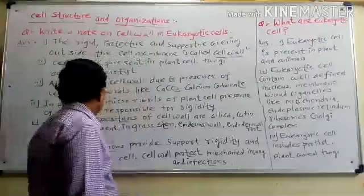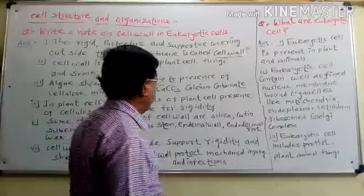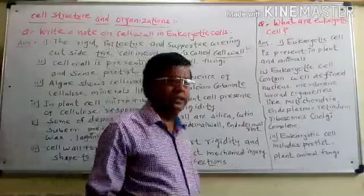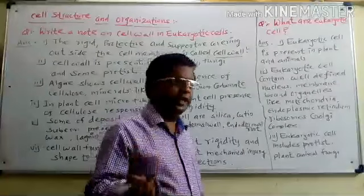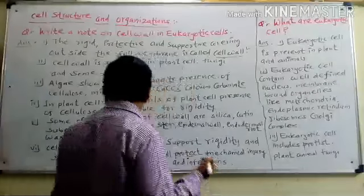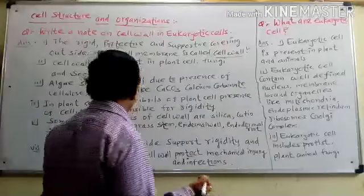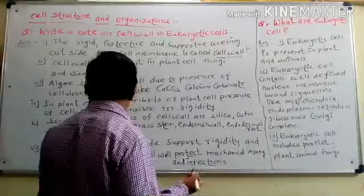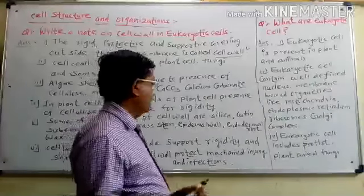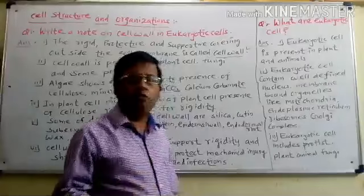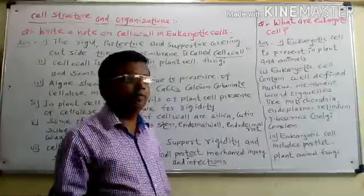Now, some deposition of cellulose in specific areas — lignin in certain areas like the endodermis — and wax give it a durable, repeatable wall. Even if it is going to move, it can also include cellulose.